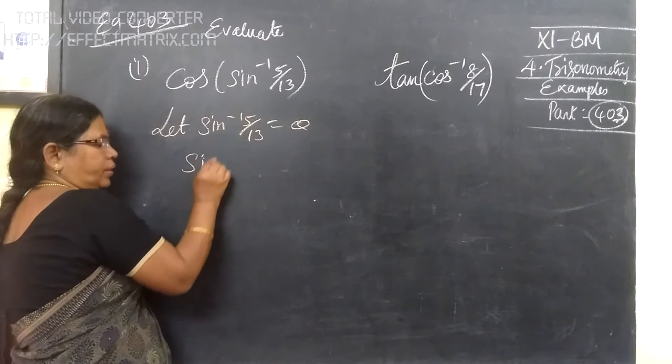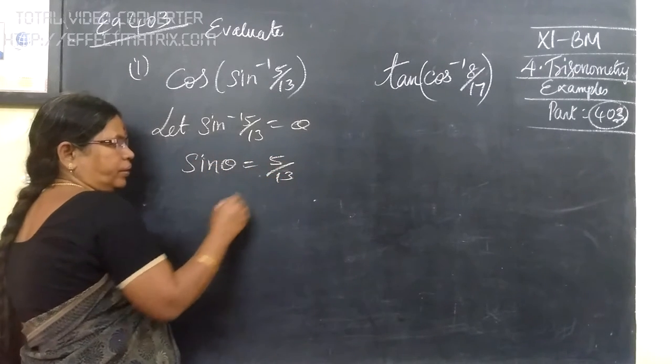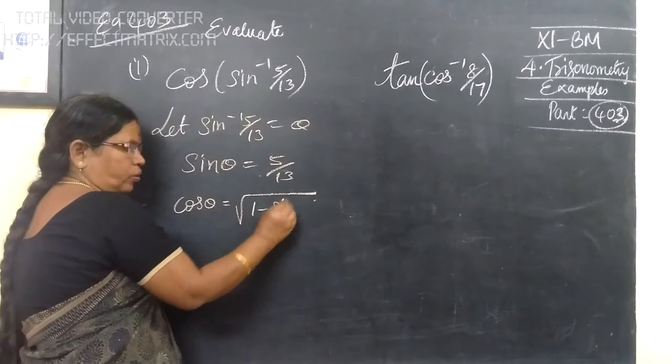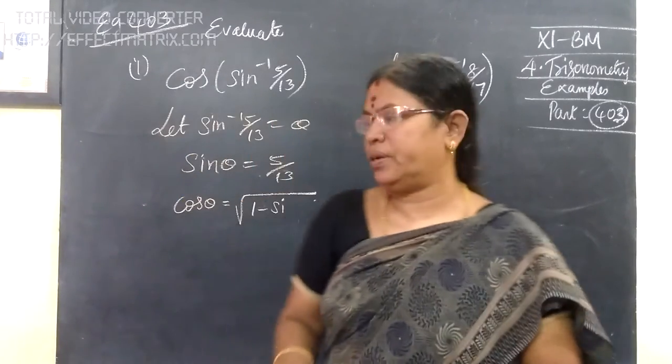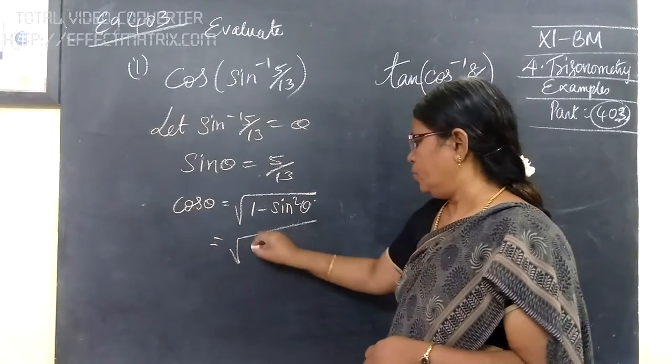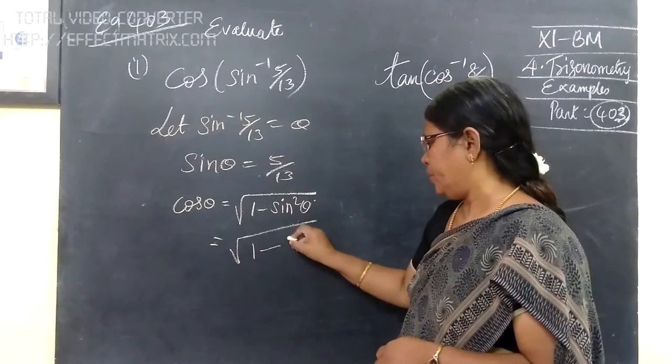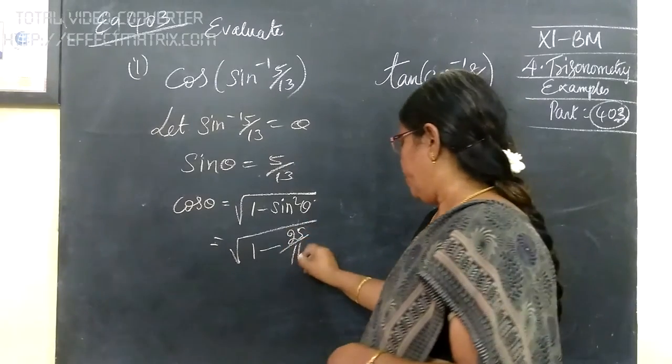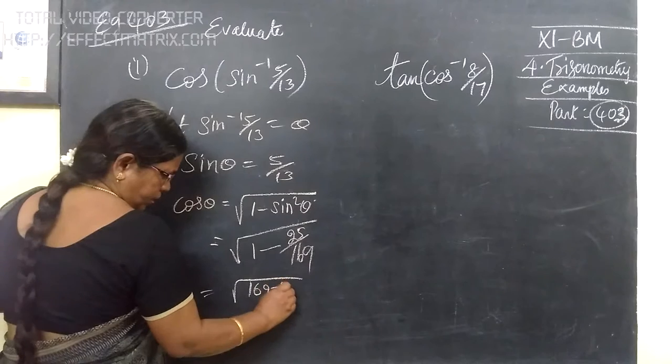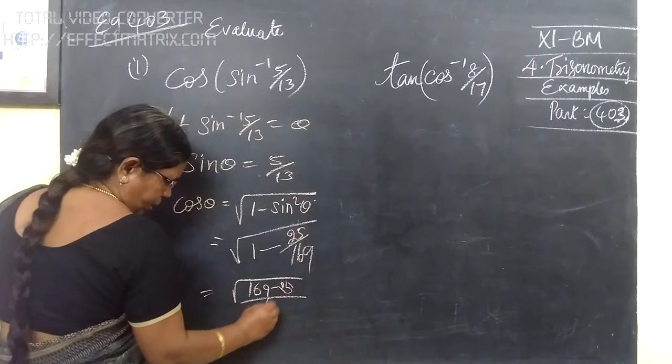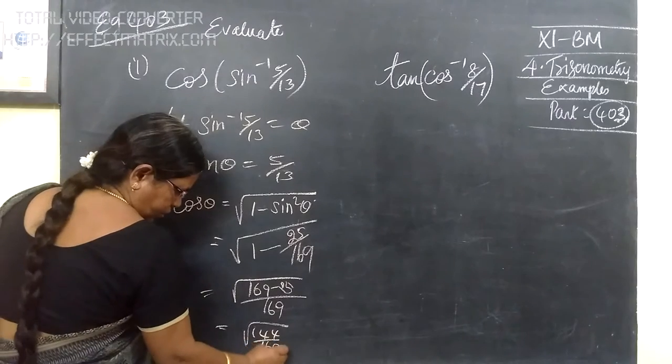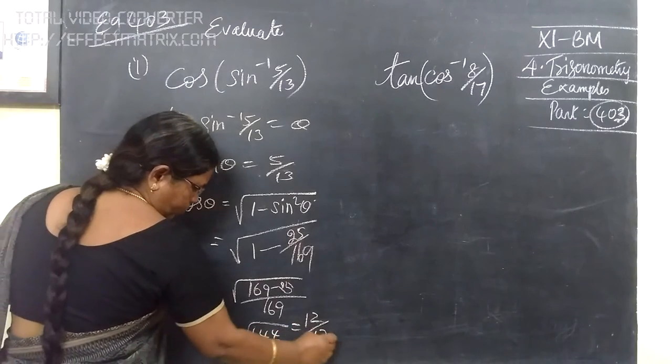Of course, sine theta equals 5 by 13. So, cos theta equals root of 1 minus sine squared theta. So, root of 1 minus sine squared theta. So, equal to root of 1 minus sine theta 5 by 13, which is 1 minus 25 by 169. So, root of 169 minus 25 by 169. So, root of 144 by 169 equals 12 by 13.